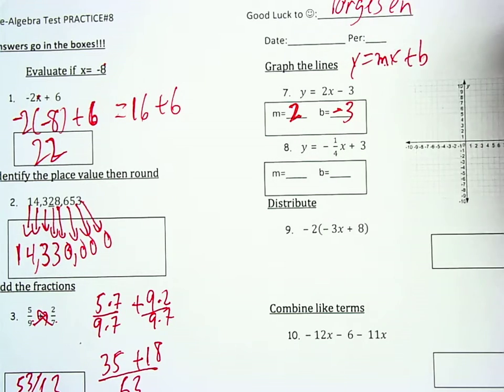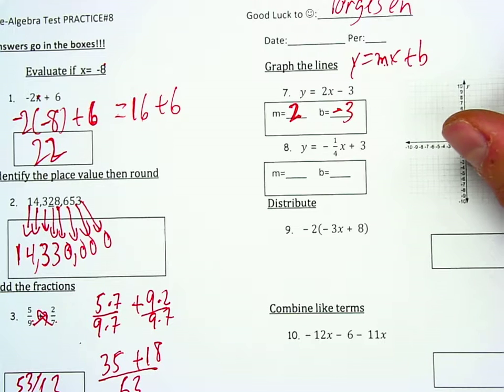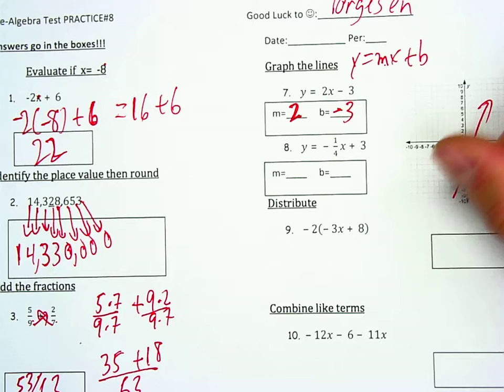So for this first line, question 7, I'm going to start at negative 3, 1, 2, 3 on the y-axis. I'm going to go up 2 and over 1. That will be the line right there.